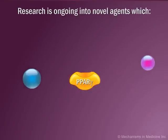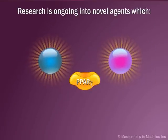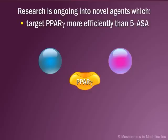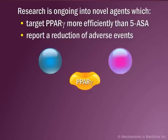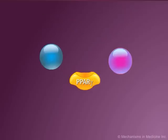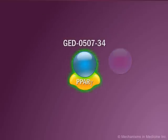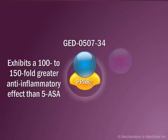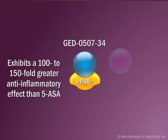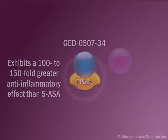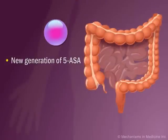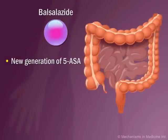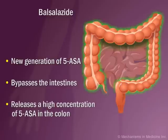Novel agents with similar mechanisms to 5-ASA, but which target PPAR-gamma more efficiently and report a reduction of adverse events, are currently under investigation. For example, the compound GED050734 exhibits a 100-to-150-fold greater anti-inflammatory effect than 5-ASA. A new generation of 5-ASA, Balsalazide, is able to bypass the small intestine and release a high concentration of 5-ASA in the colon.